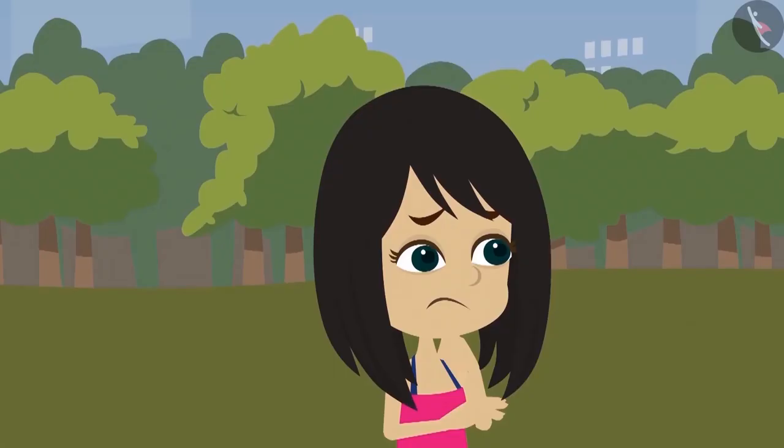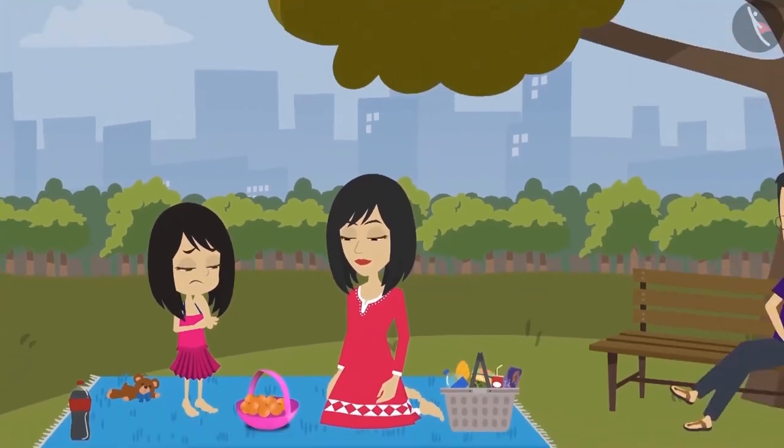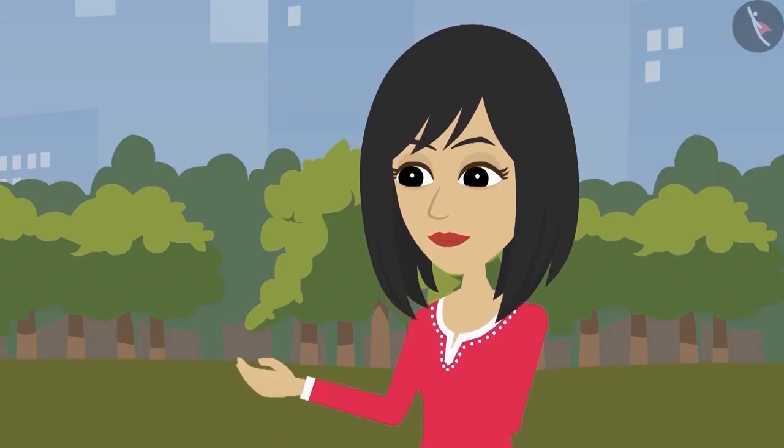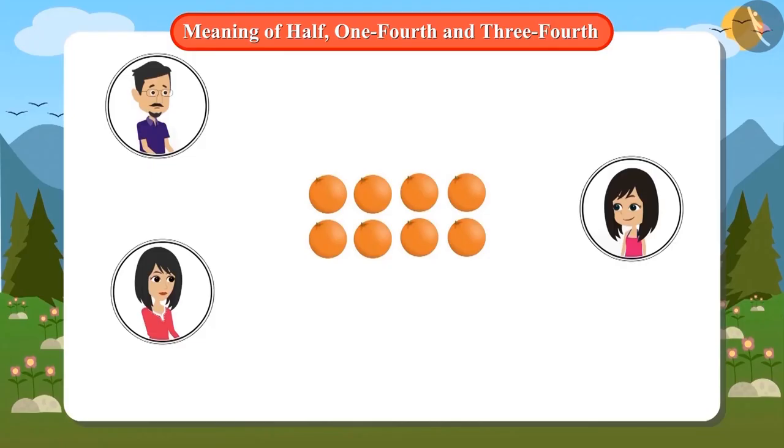But Neha's problem has not been solved. How should these oranges be divided? Neha asks her mother. Mummy tells Neha that out of these oranges, she will give half of the oranges to Papa, keep one-fourth oranges with herself, and give the remaining oranges to Neha.